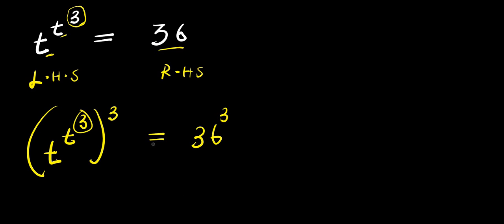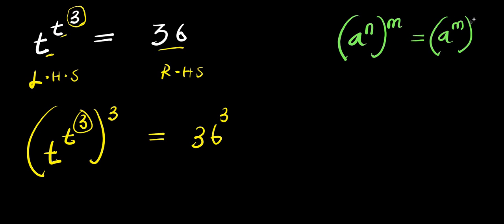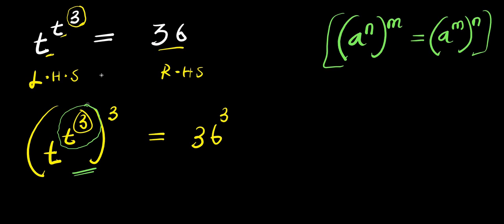The next thing we are going to do is consider this identity: if you have a to the power of n, and this is raised to the power of m, this equals a to the power of m raised to the power of n. In this part of the equation, we are going to consider t to the power of 3 as a unit — this will represent our n, and the 3 here will represent the m.